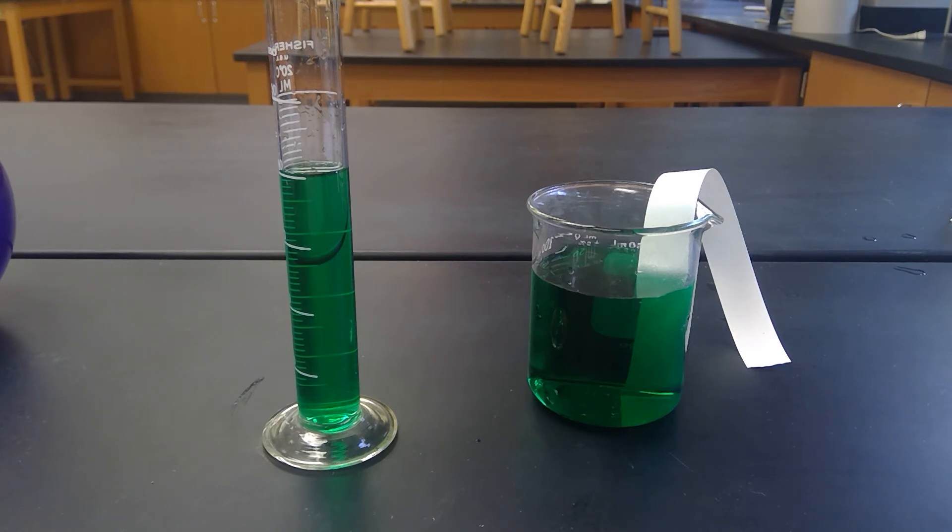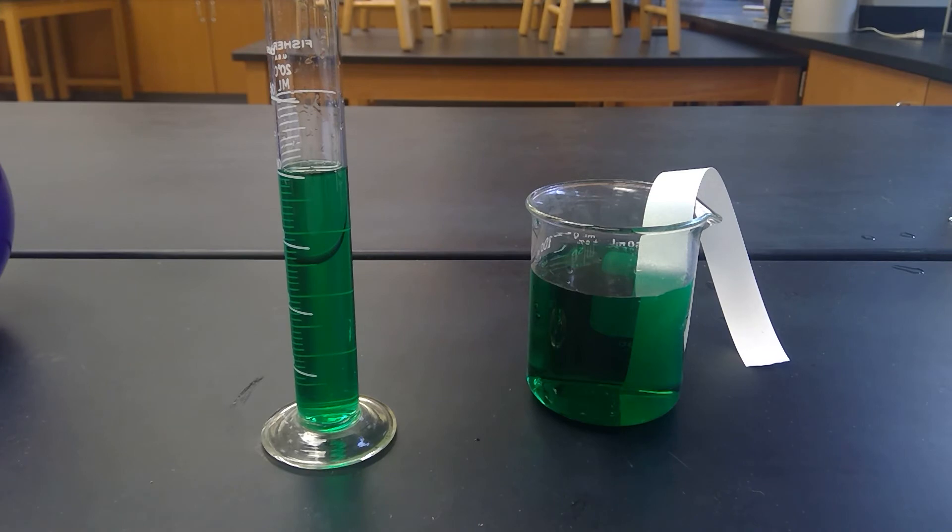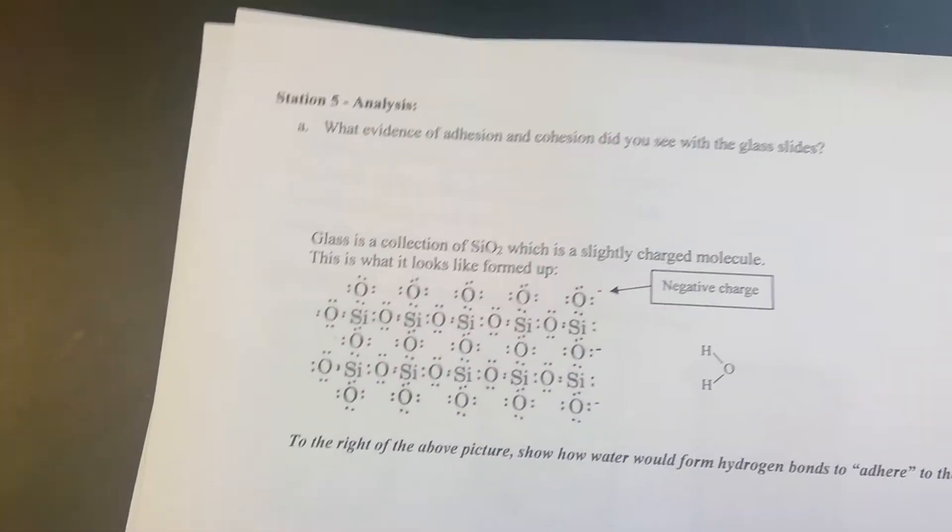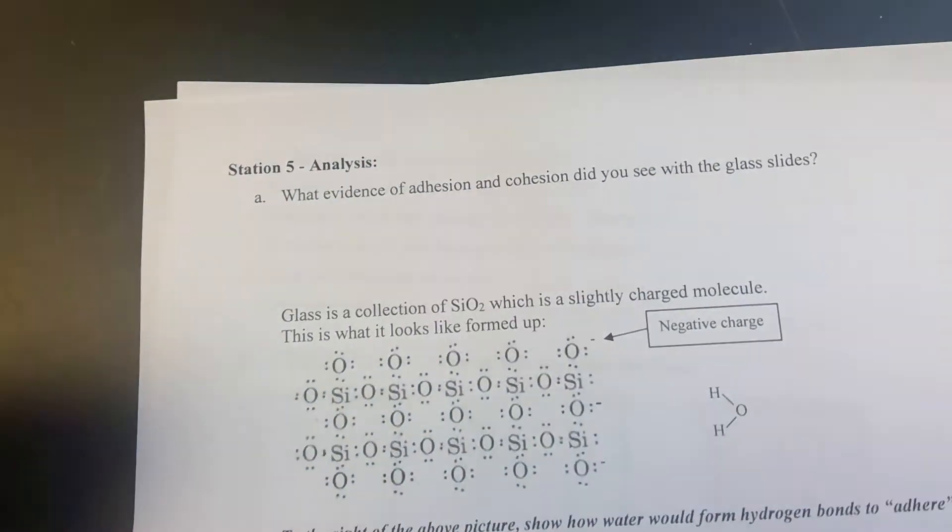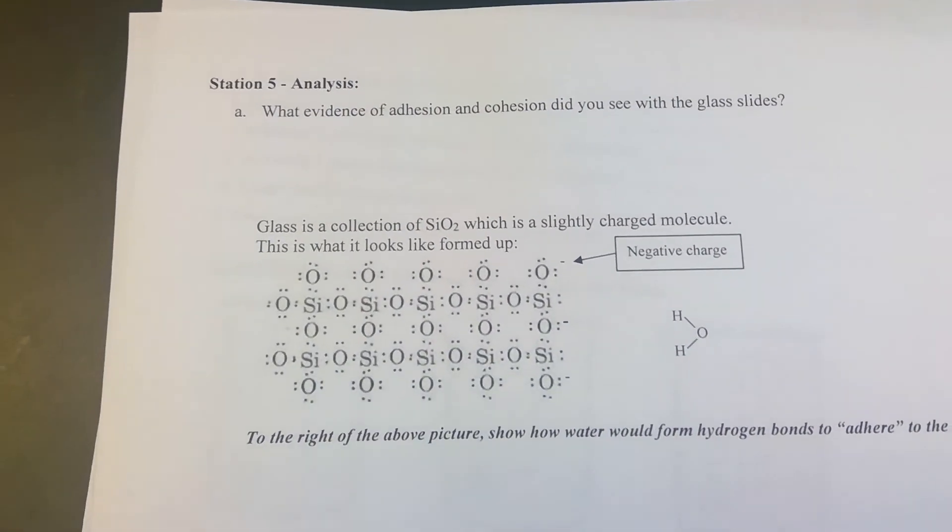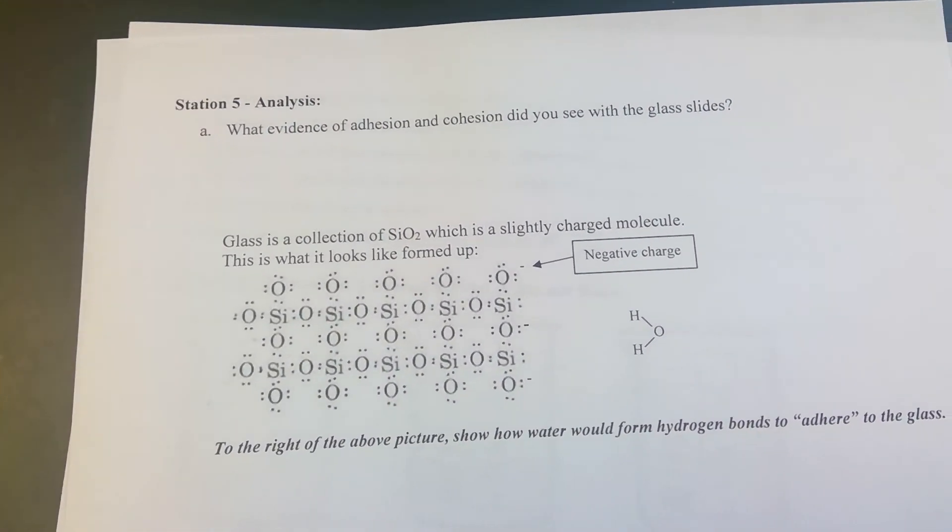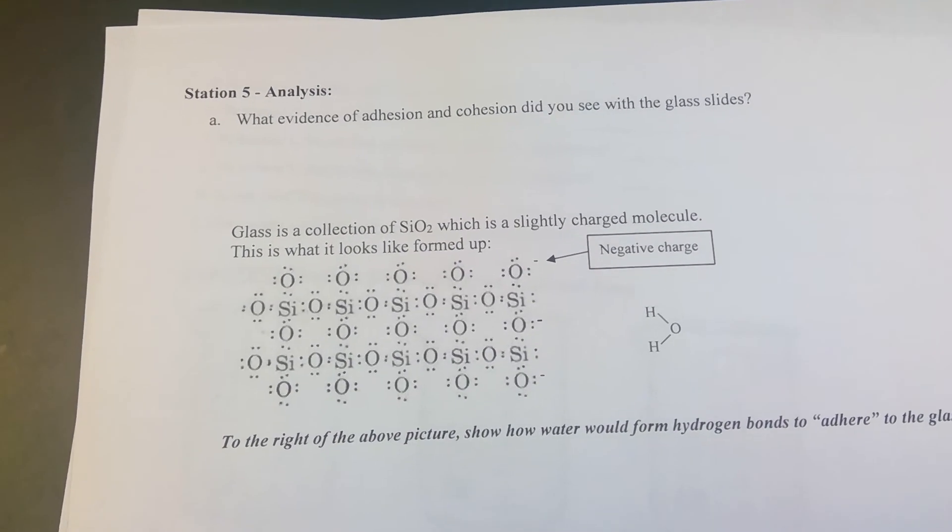You want to look for evidence of adhesion and cohesion on the glass slides. And then you have a picture here. This is a picture of glass, and then this is water. And what you want to show is how a hydrogen bond might form that would lead to adhesion.